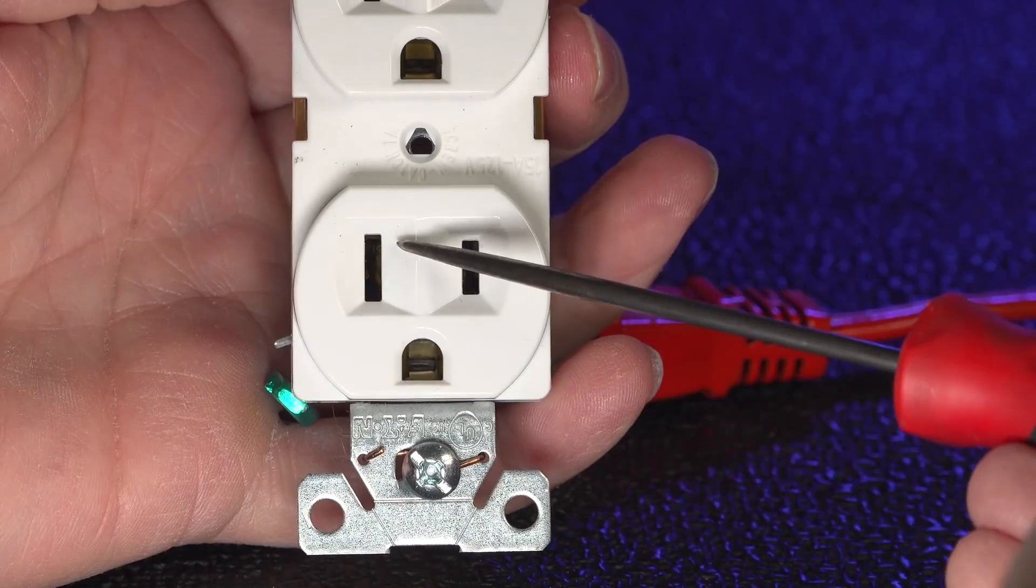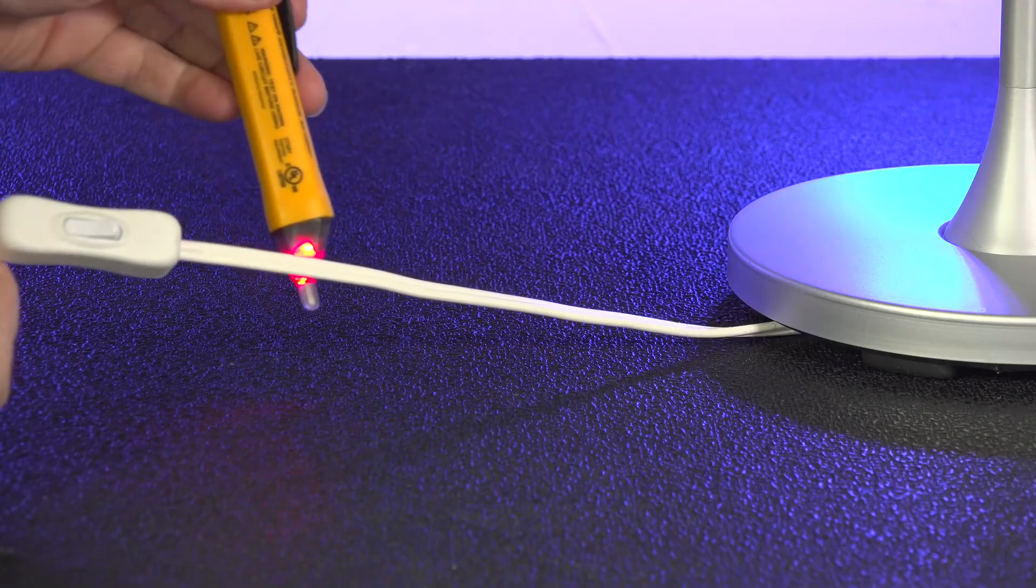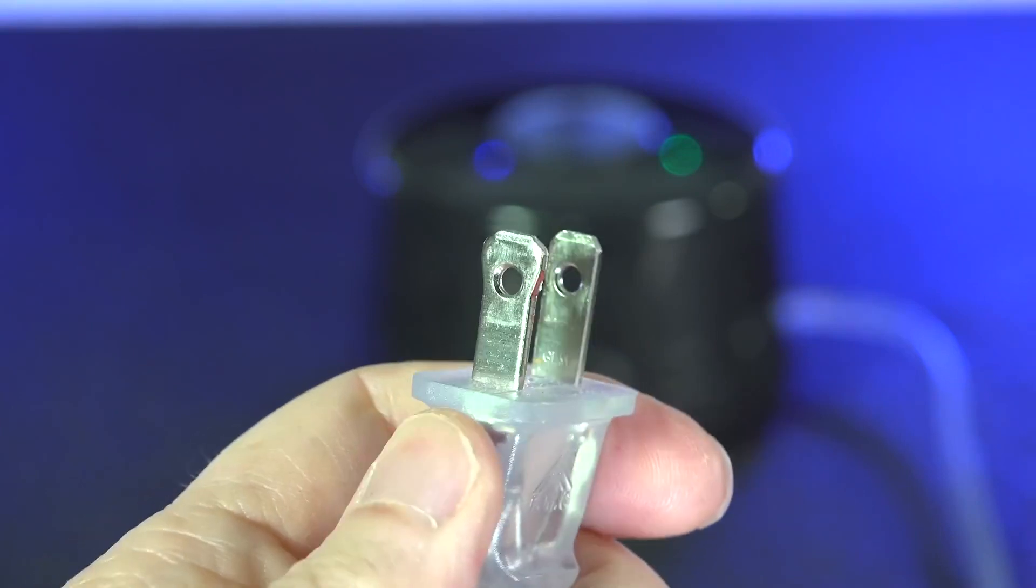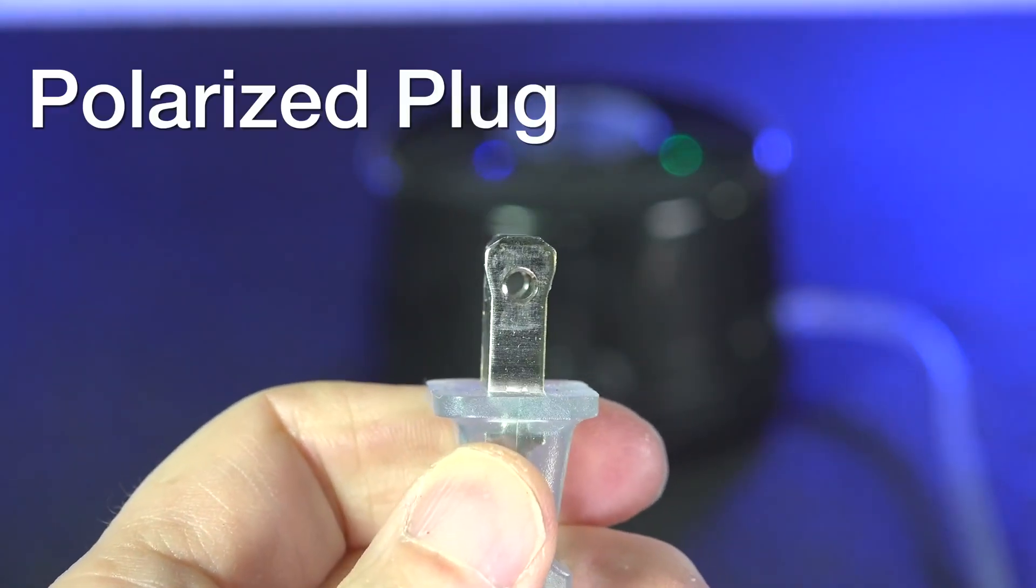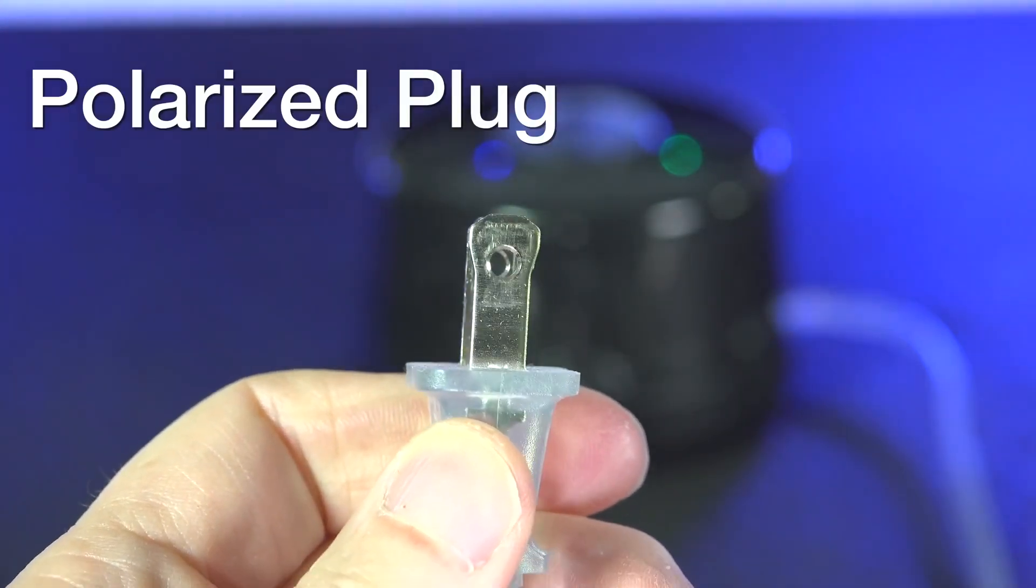Well in this video, I'm going to unlock the mystery and explain exactly why they're there. When you see a plug that has one larger prong, that's called a polarized plug, but as you know they're not all like this.